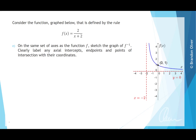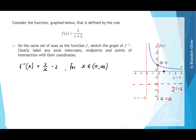For part e, on the same set of axes as f, we sketch the graph of f inverse and clearly label any axial intercepts, endpoints, and points of intersection. f inverse of x equals 2 divided by x minus 2, for x in 0 to infinity. Because x and y have been swapped, the vertical asymptote is now at x equals 0 where it was previously y equals 0, and the horizontal asymptote is y equals negative 2 where x was previously negative 2. The y-intercept of (0, 1) on f becomes the x-intercept (1, 0) on f inverse, giving us the inverse hyperbola curve.